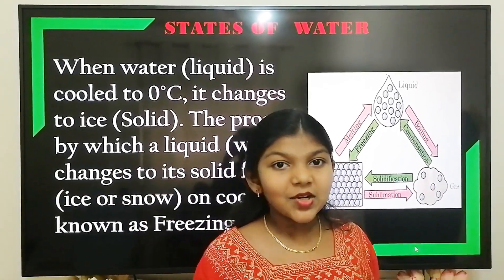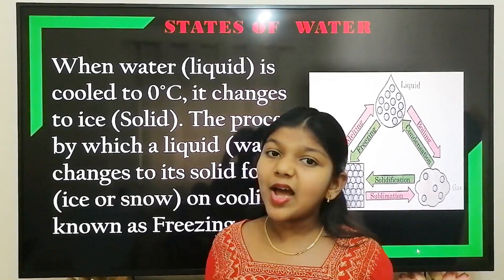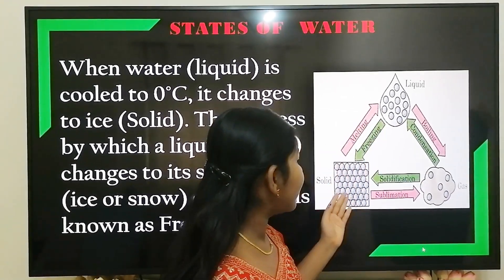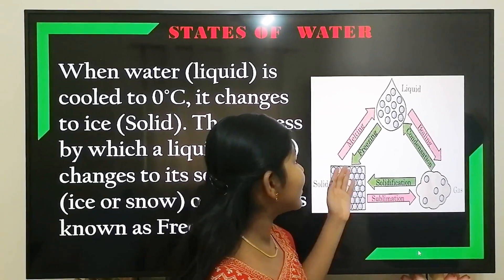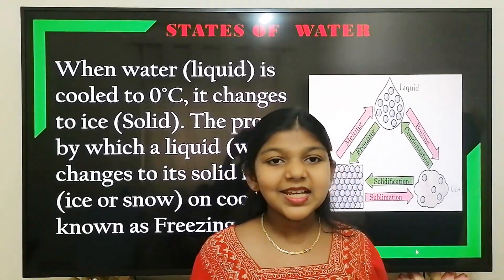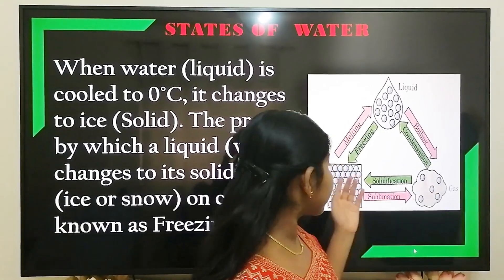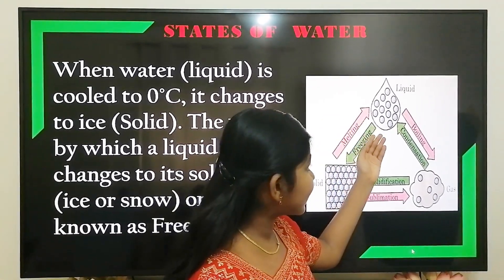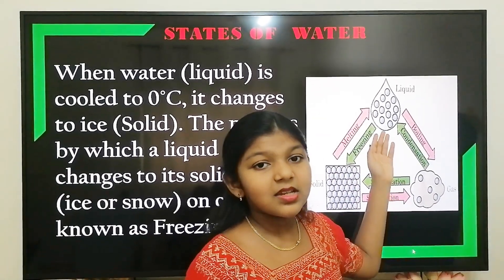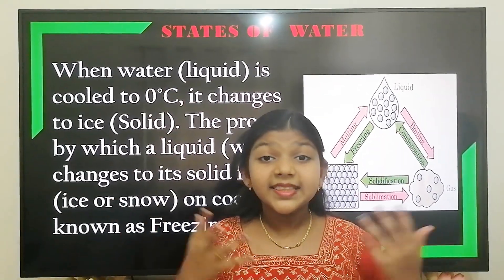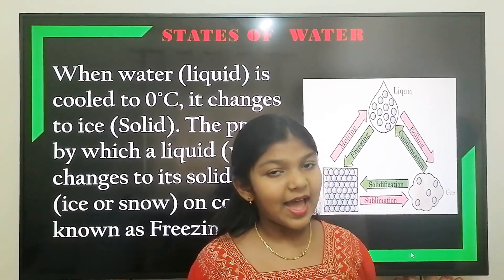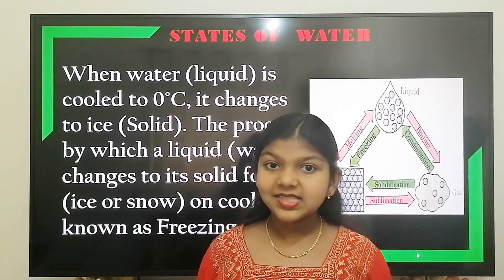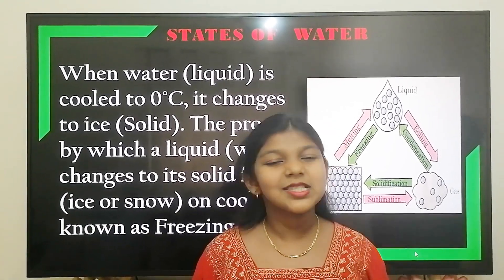When water is cooled to 0 degree Celsius, it changes into ice. The process by which the liquid state of water changes to its solid form — ice or snow — on cooling is known as freezing. Melting is just opposite to freezing. The process by which the solid state of water changes into its liquid state as the temperature increases is known as melting. The temperature at which water changes into ice is known as freezing point, and the temperature at which ice changes into water is known as melting point.